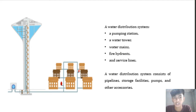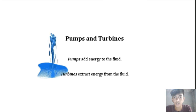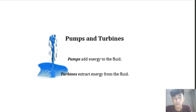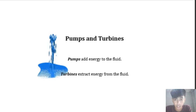The water distribution system consists of a pumping station, a water tower, water mains, fire hydrants, and service lines. It also consists of pipelines, storage facilities, pumps, and other accessories. Regarding pumps and turbines: the pump adds energy to the fluid while the turbine extracts energy from the fluid.